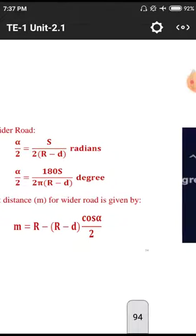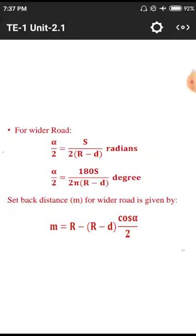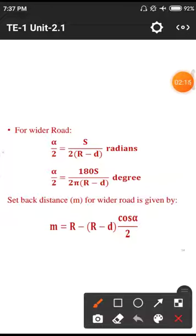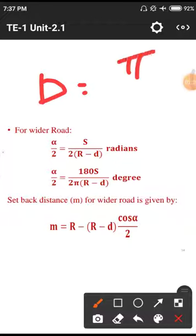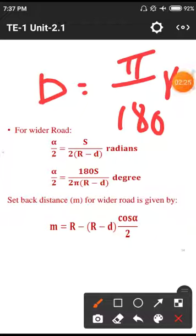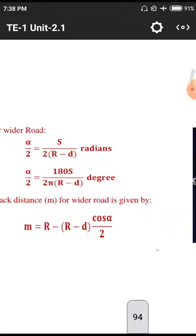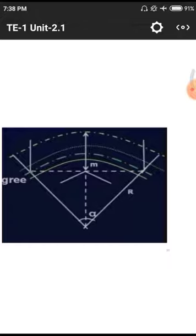For wider roads and normal roads we have different kinds of formulas with respect to radians and degrees. One radian equals pi/180 degrees, and one degree equals pi/180 radians. These conversions you need to remember for solving problems.